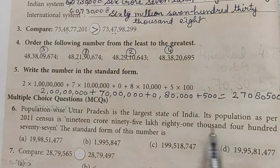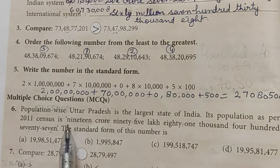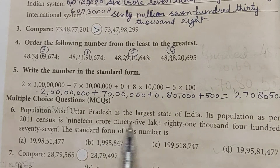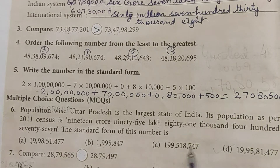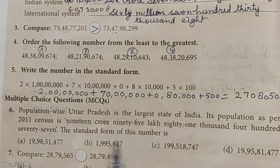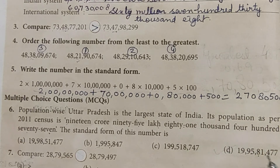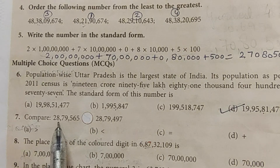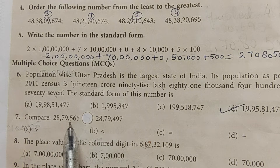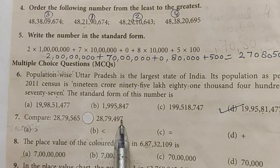Let's identify the standard form. Reading the number: 19 crore 95 lakh 81,471. Checking the options — both Indian and international system representations are given. Option D, 19 crore 95 lakh, is the correct answer.